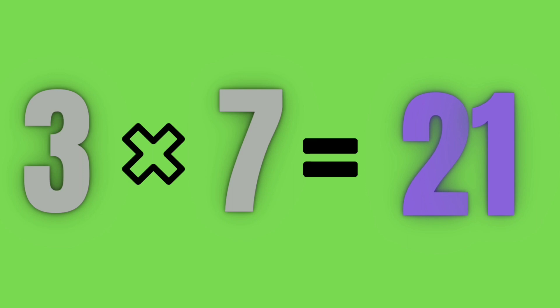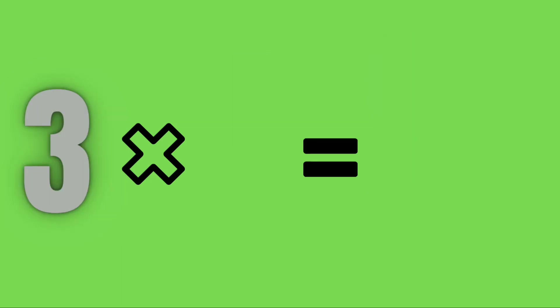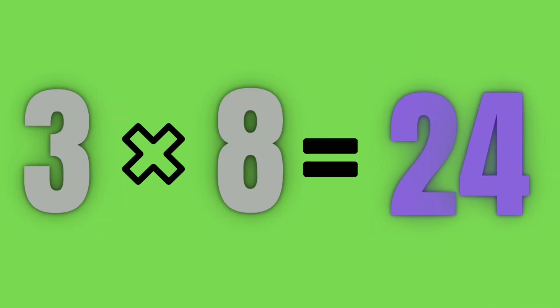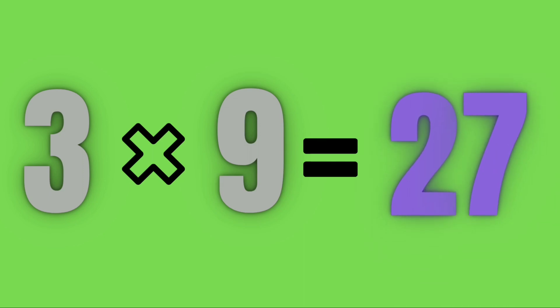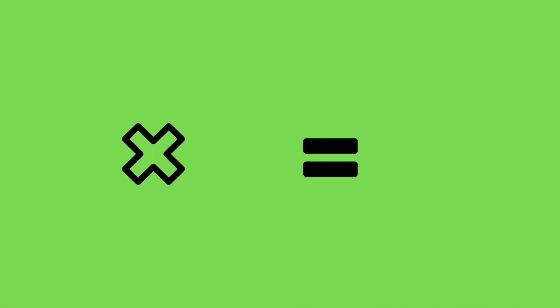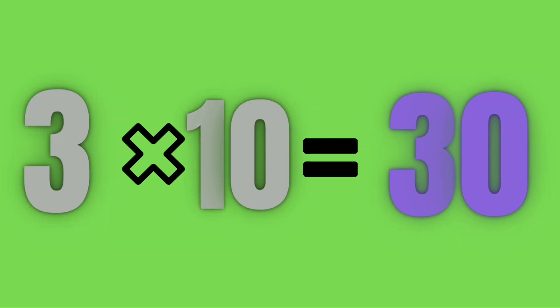Three sevens are twenty-one. Three eights are twenty-four. Three nines are twenty-seven. Three tens are thirty.